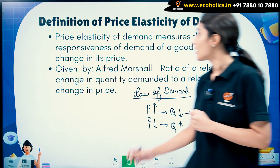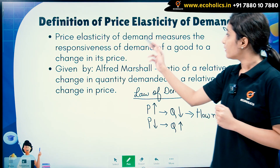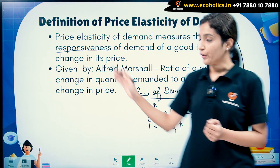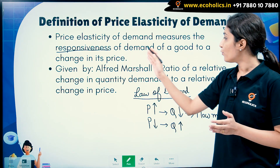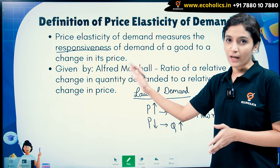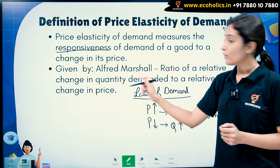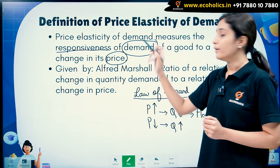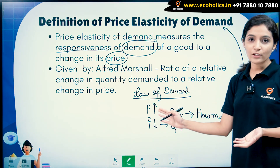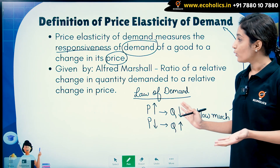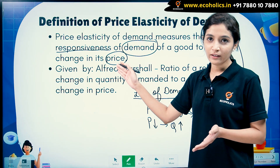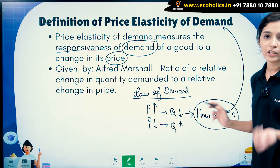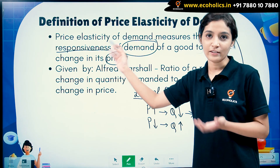Let's look at our definition first. Price elasticity of demand measures the responsiveness — this is our keyword — the responsiveness of demand of a good to a change in its price. This definition states that when there is a change in price, by how much is our quantity demanded going to change. When we talk about 'how much', that is the concept of price elasticity of demand.